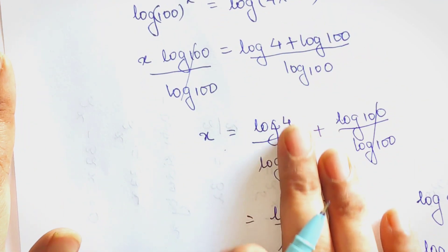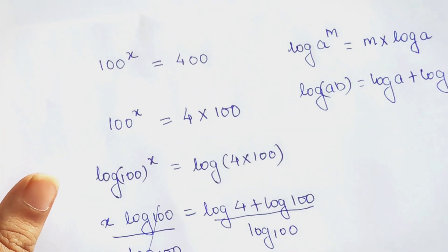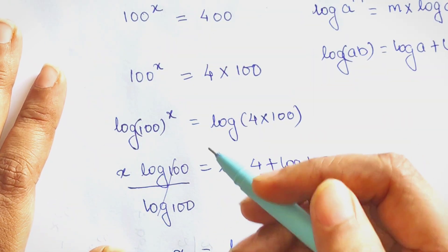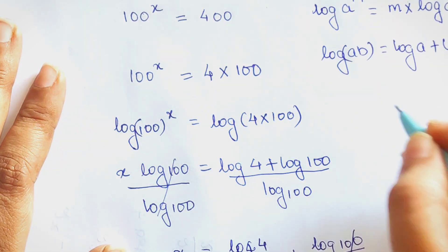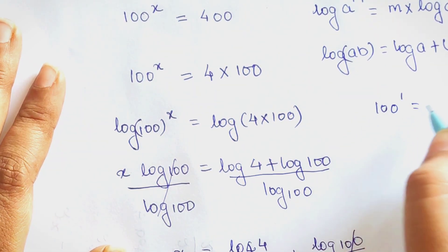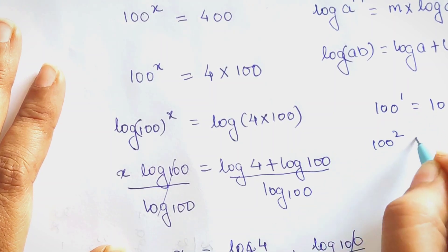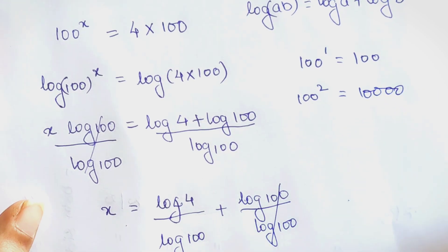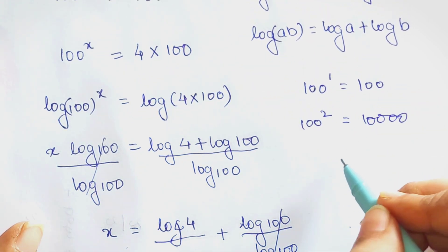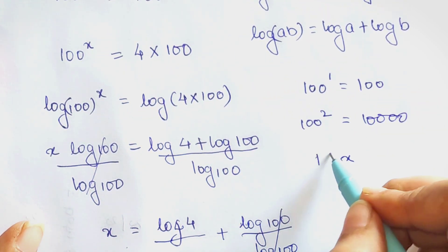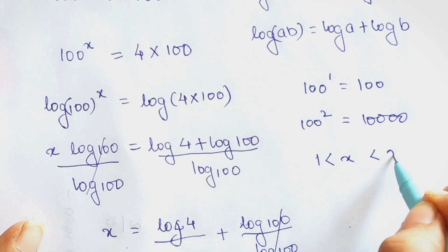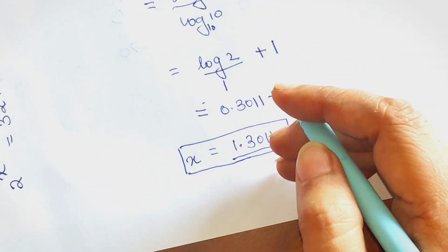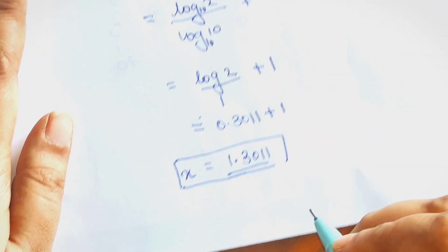As always, when given a question, try to approximate what the value of x can be. 100 raised to 1 is 100, and 100 raised to 2 is 10,000. Since the target value is 400, x must be greater than 1 and less than 2 — which is exactly what we got: x equals 1.3010.